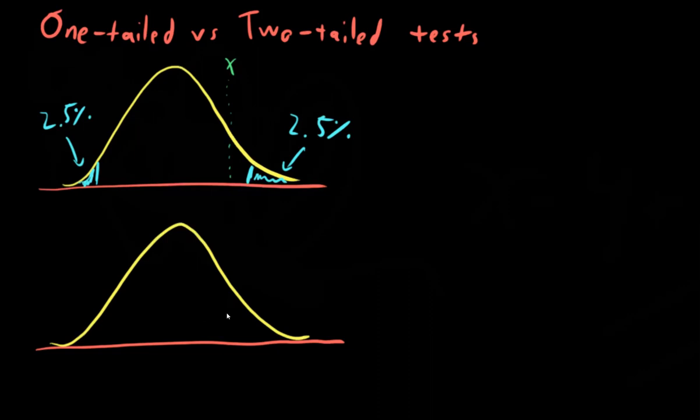So if we do a 5% test for x, and we have the same x, let's say that same x is sitting exactly where it was before, but now we're doing a one-tailed test. And let's just say, for the sake of argument,